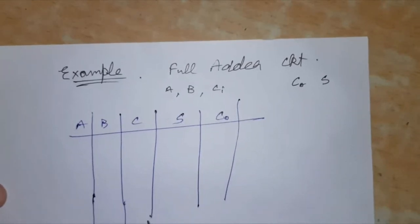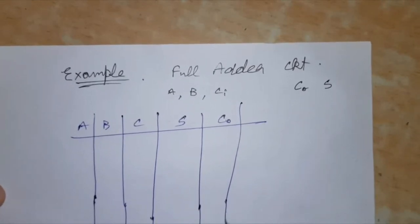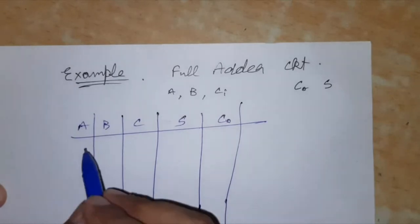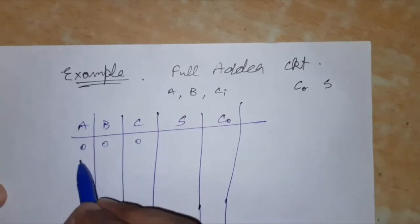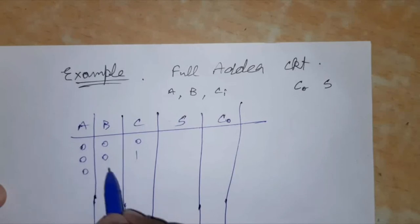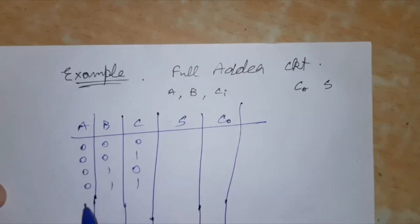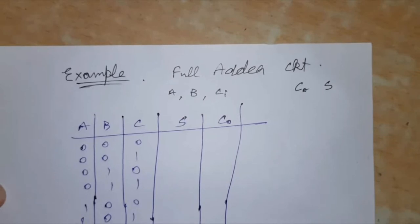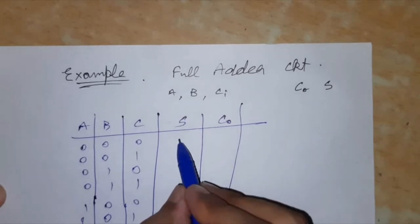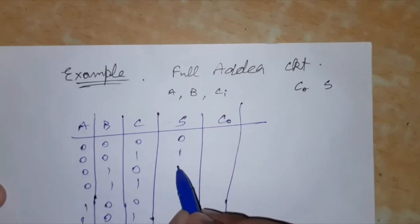So for these three inputs A, B, C we shall have possible combinations of eight: 0 0 0, 0 0 1, 0 1 0, 0 1 1, 1 0 0, 1 0 1, 1 1 0, and 1 1 1.